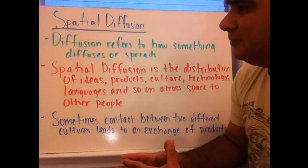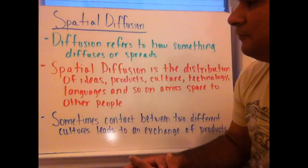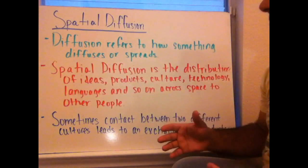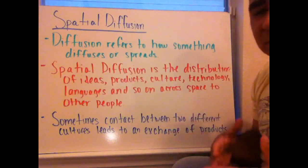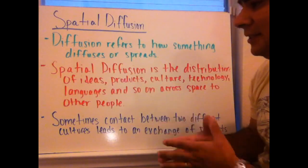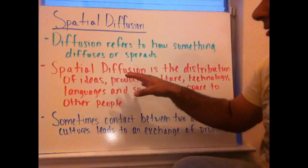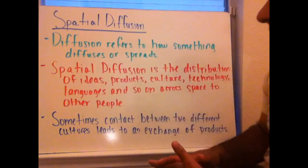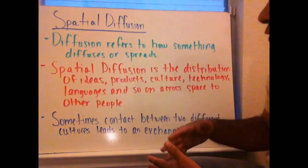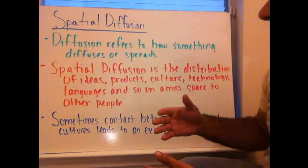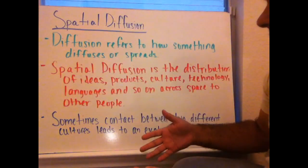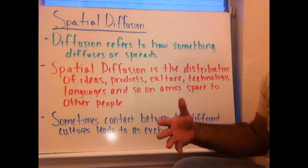First off, spatial diffusion. Diffusion refers to how something diffuses or spreads. Spatial diffusion is a distribution of ideas, products, culture, technology, languages, and so on, across space to other people.